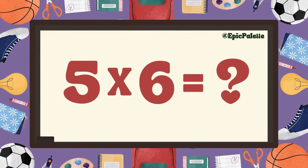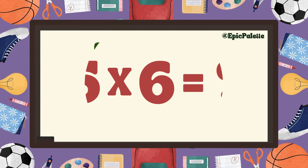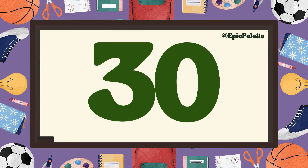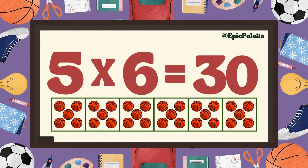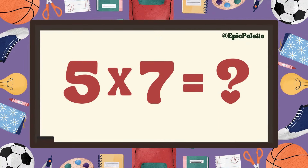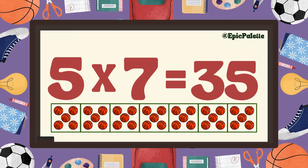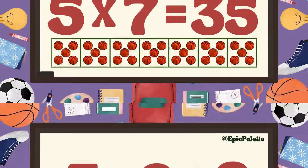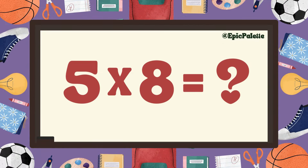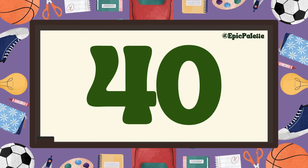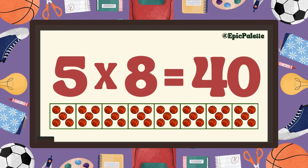5 times 6 equals 30. That's right. 5 times 6 equals 30. You got it. 5 times 7 equals... 35. That's right. 5 times 7 equals 35. Fantastic. You're doing great. 5 times 8 equals... 40. That's right. 5 times 8 equals 40. Perfect.